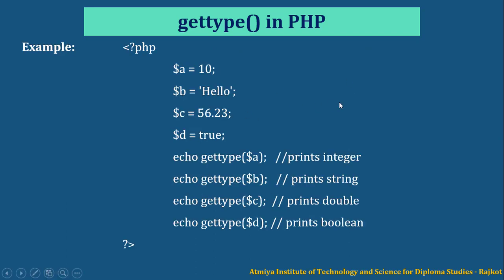This is a sample program of getType function. Here four variables are taken: variable A with value 10, so the type is integer. Variable B has a string value. Variable C has a value of type float or double. Variable D has a value of type boolean. Using echo with the getType function, you can get the returned data type.